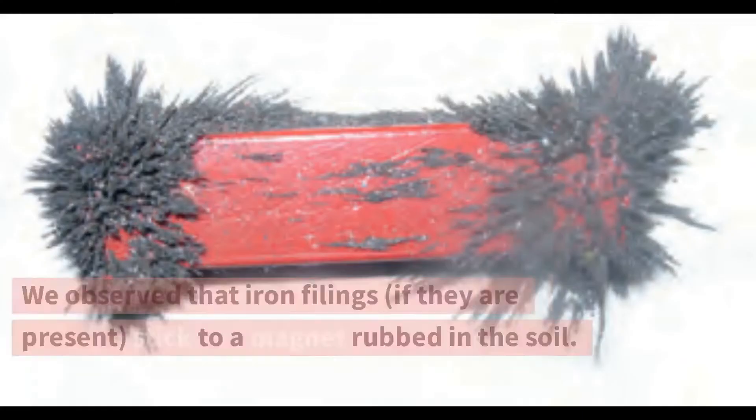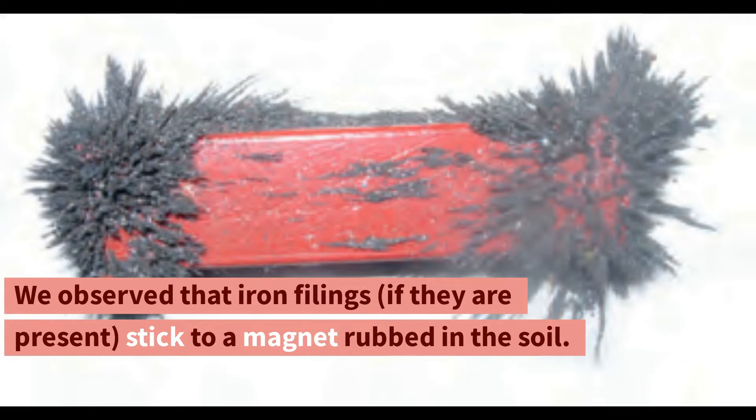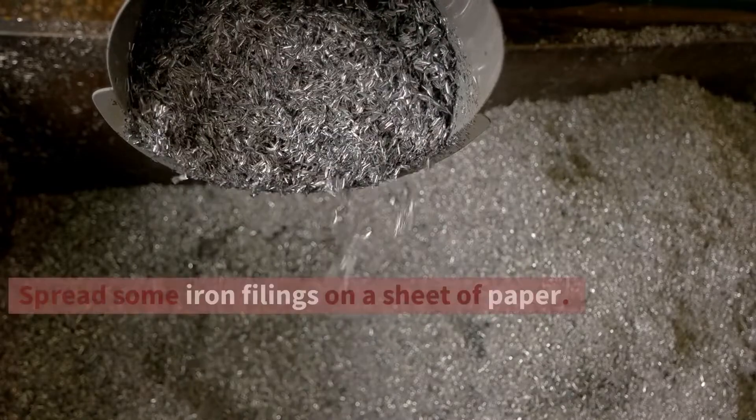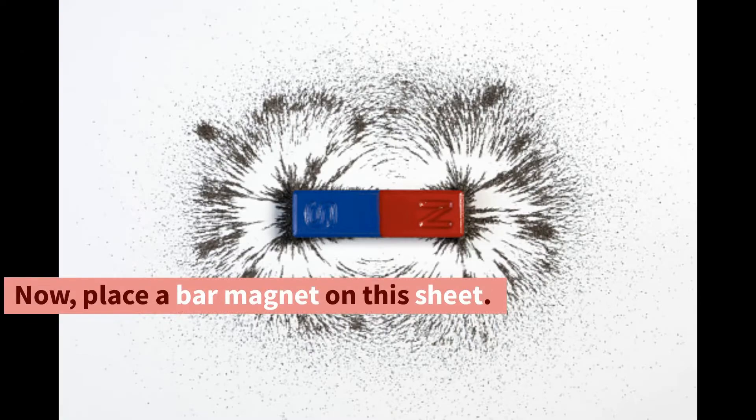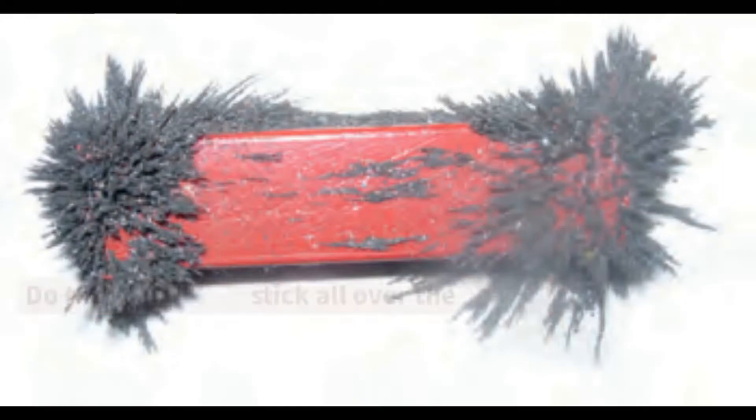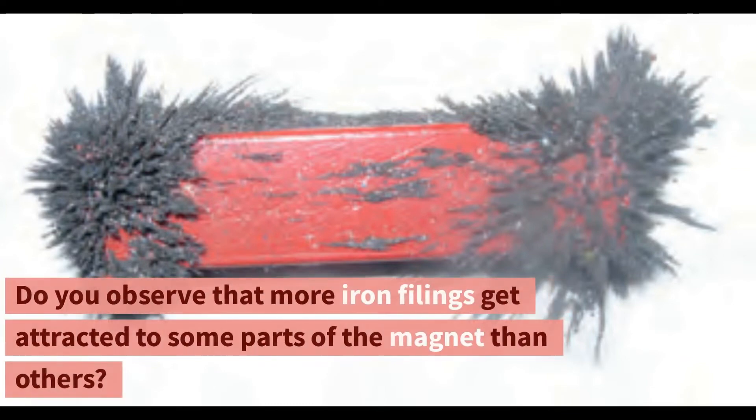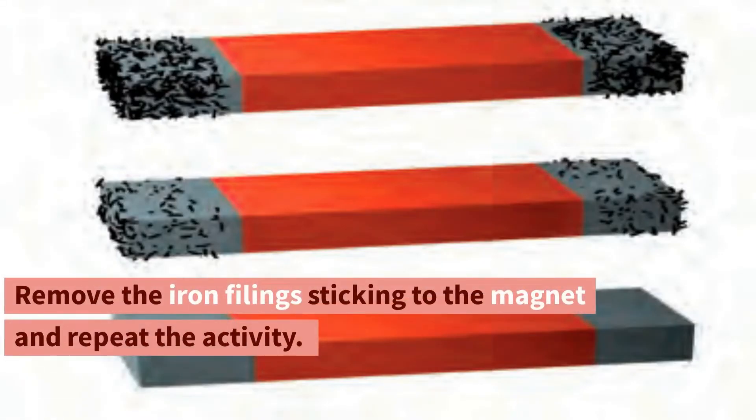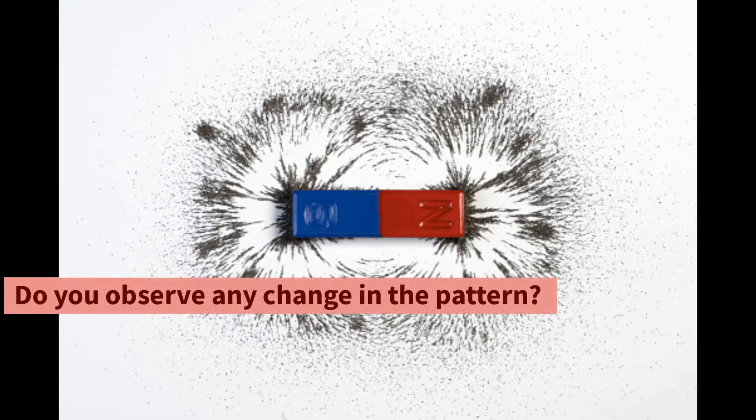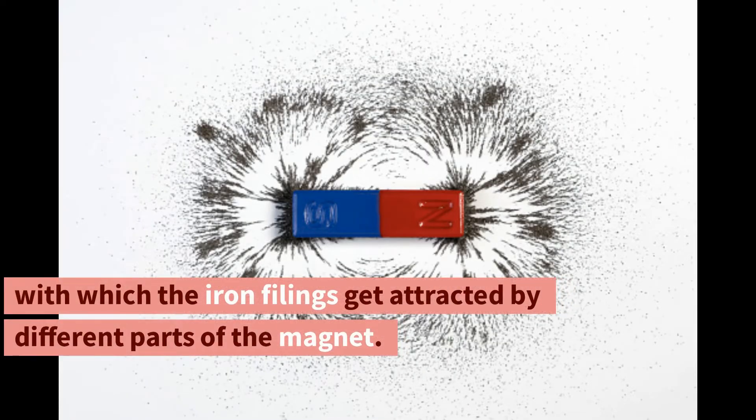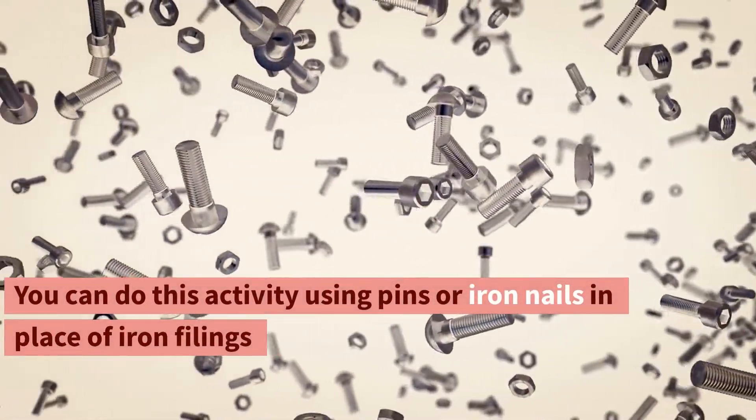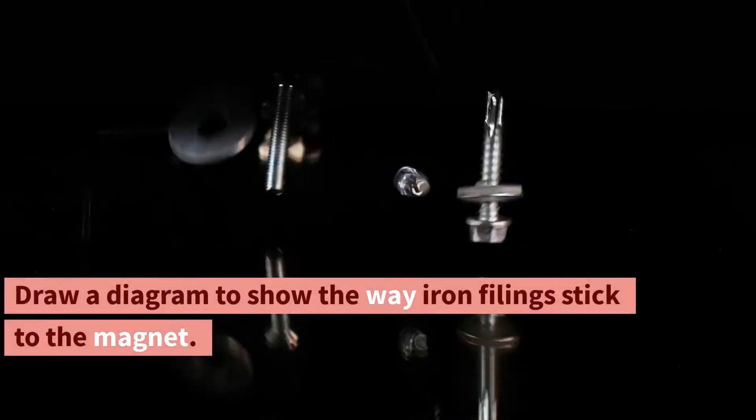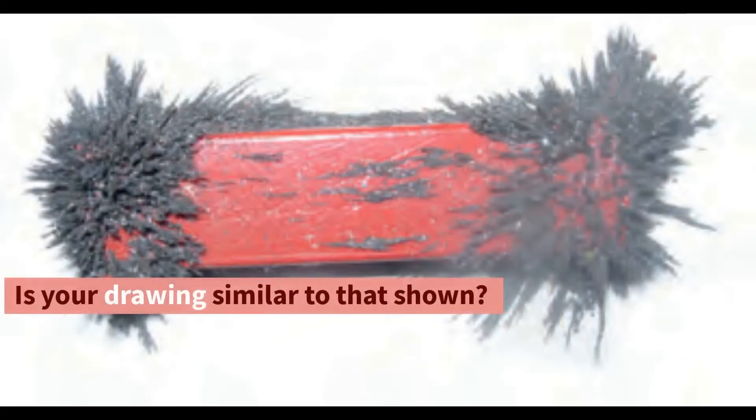Poles of magnet. We observed that iron filings, if they are present, stick to a magnet rubbed in the soil. Did you observe anything special about the way they stick to the magnet? Activity 4. Spread some iron filings on a sheet of paper. Now place a bar magnet on this sheet. What do you observe? Do the iron filings stick all over the magnet? Do you observe that more iron filings get attracted to some parts of the magnet than others? Remove the iron filings sticking to the magnet and repeat the activity. Do you observe any change in the pattern with which the iron filings get attracted by different parts of the magnet. You can do this activity using pins or iron nails in place of iron filings and also with magnets of different shapes. Draw a diagram to show the way iron filings stick to the magnet.